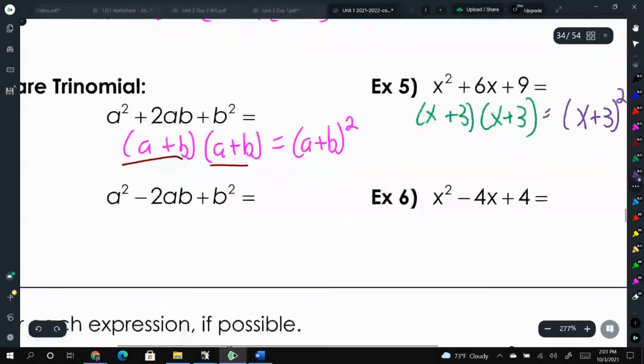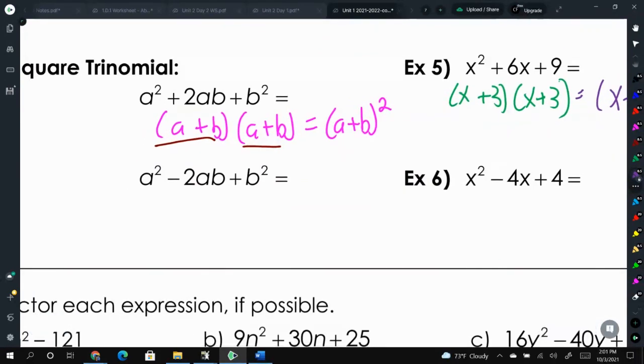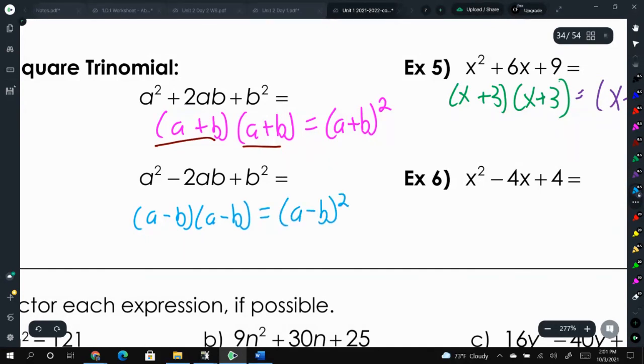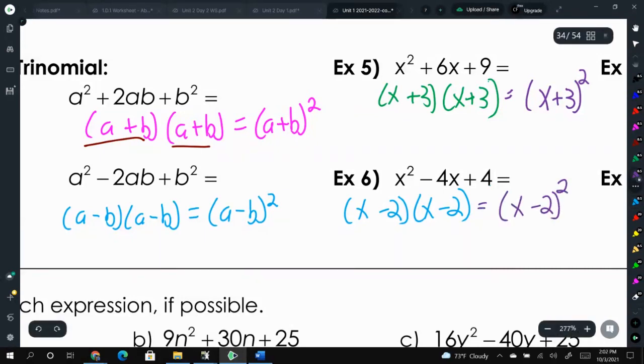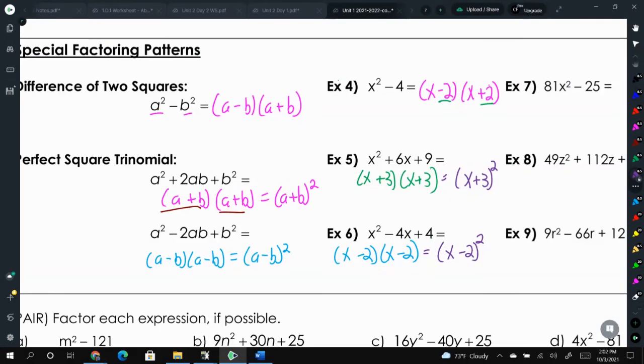And the last one is the same thing as we had for example 5, just with a subtraction sign. So this is actually going to be a minus b times a minus b, or a minus b squared. Again, for something like number 6, it might be easier to see, okay, well what two numbers add up to negative 4 but multiply to positive 4. X minus 2 times x minus 2. Negative 2 times negative 2 is positive 4, negative 2 plus negative 2 is negative 4.